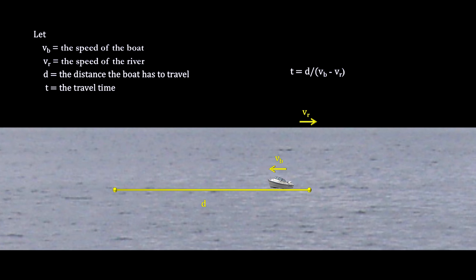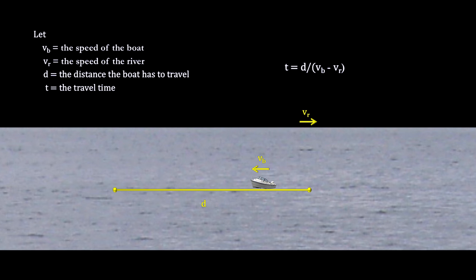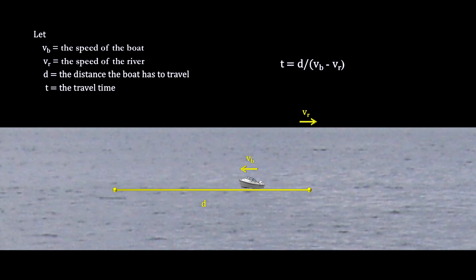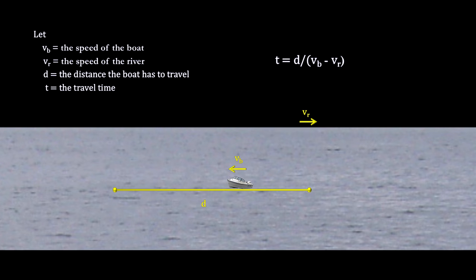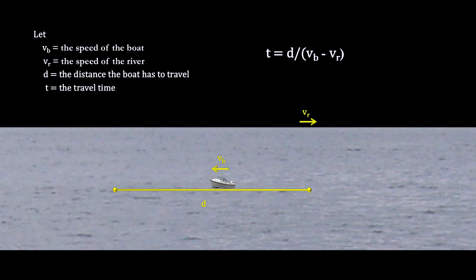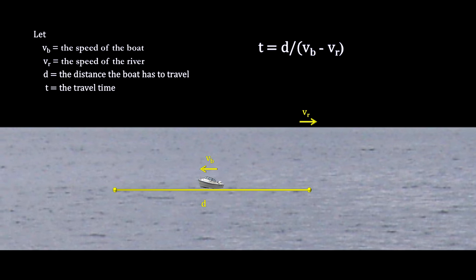The solution is pretty straightforward. The time it takes is just the distance it has to travel, divided by the speed it is traveling. And that speed would be its velocity, minus the velocity of the river.